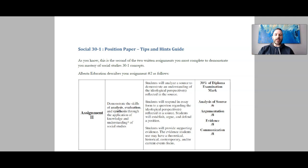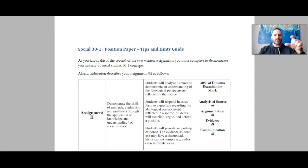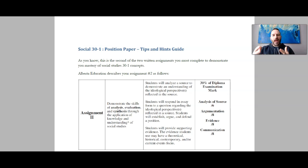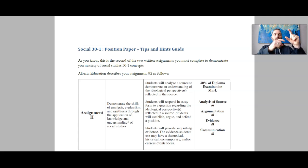How much economic control is the right amount in society? So you're going to read the source and you need to first understand what the perspective of the source is. Now it says students will respond in essay form. This is an essay. It requires an introductory paragraph — we call that the analysis of the source paragraph. It requires body paragraphs: one, two, three, and then you'll have a concluding paragraph. The structure of the essay will include five paragraphs: your intro, which we call the analysis of the source paragraph, three body paragraphs which are case studies that further your position on the topic, and then a conclusion.